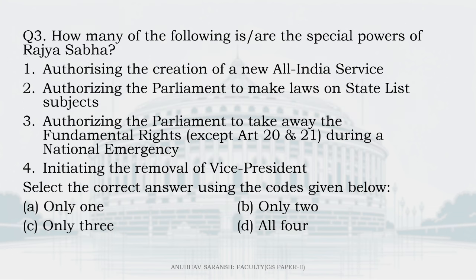How many of the following are the special powers of Rajya Sabha? First: authorizing the creation of a new All-India service. This is Article 312. If it is urgent or expedient in national interest, the Rajya Sabha can authorize Parliament to create a new All-India service. Statement 1 is correct.